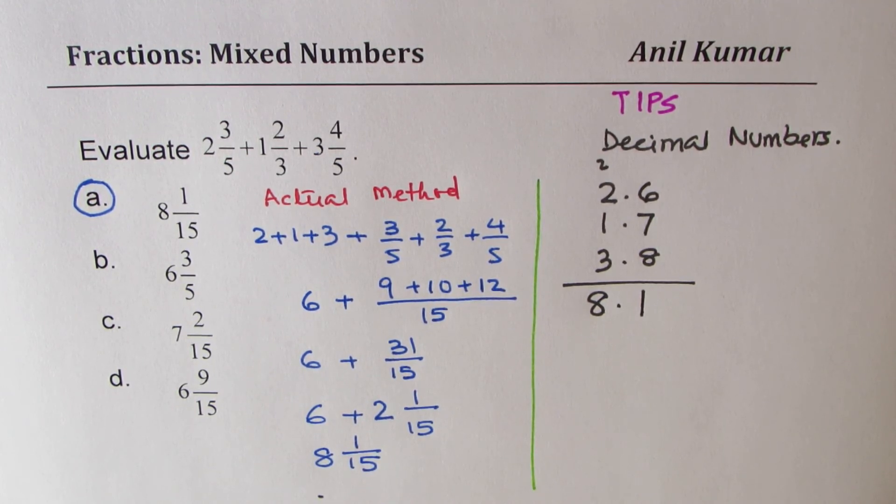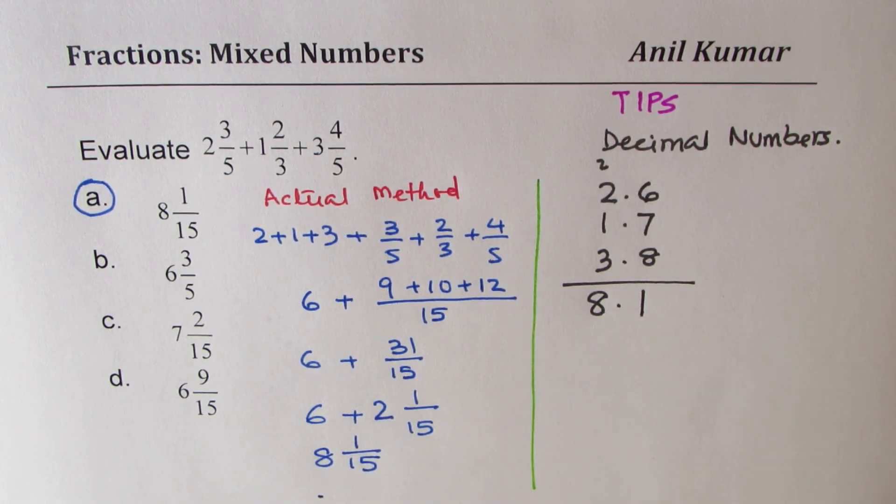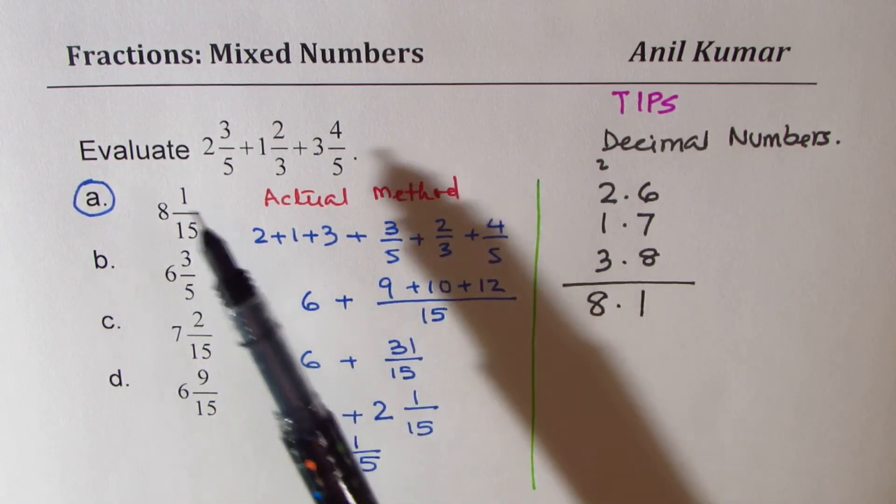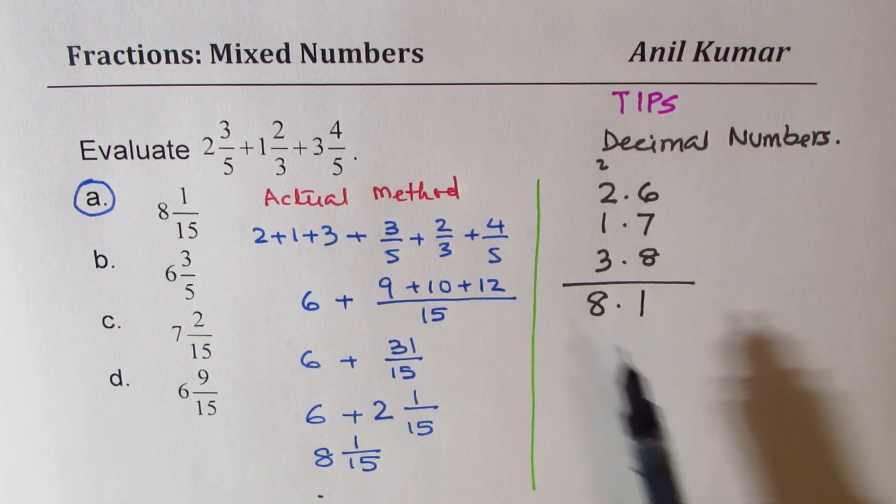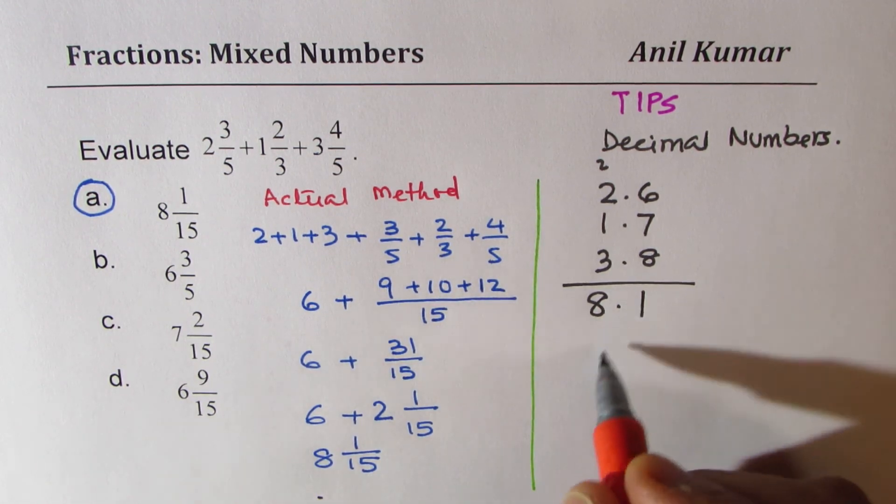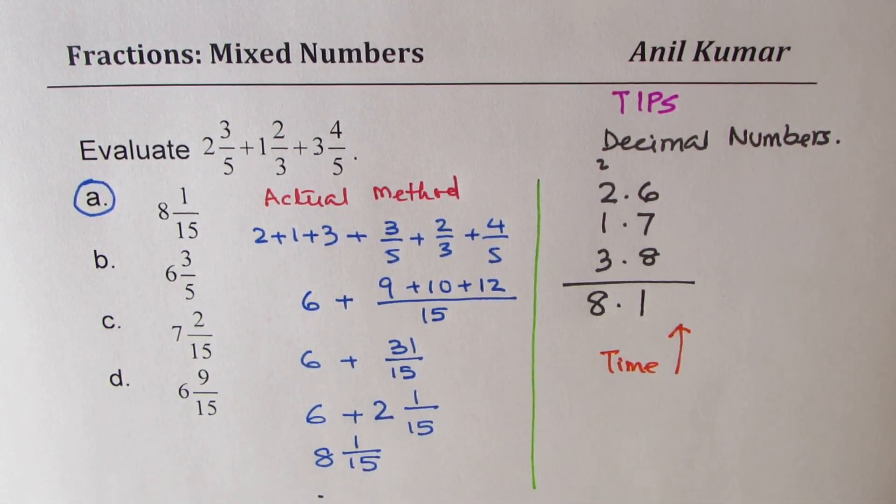So this is the tip for you. Adopt the method which you feel like. It all really depends on where you are answering this question. Is the method important or the time is key? So if time is key, follow this method. That is my advice on working with such mixed numbers.